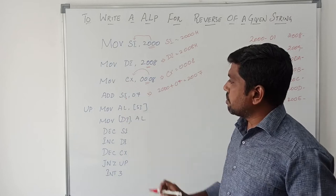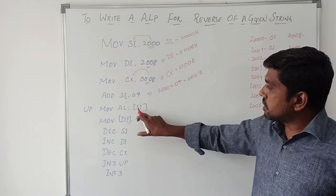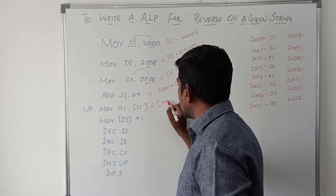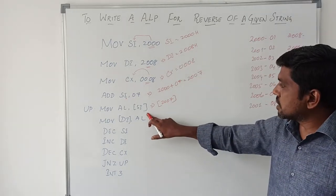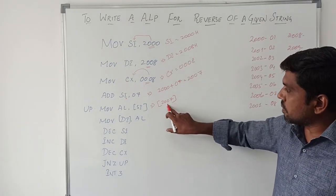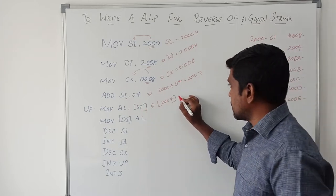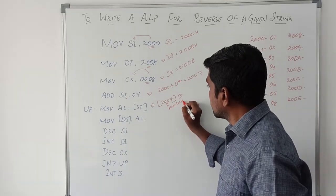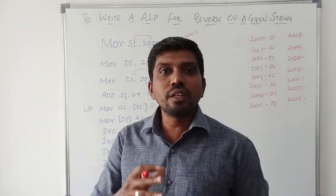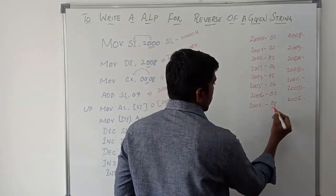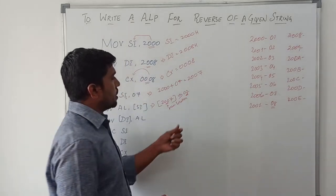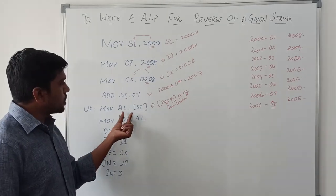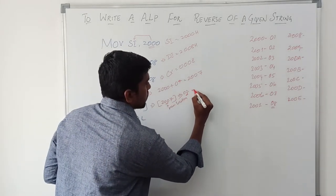Then MOV AL, [SI]. Within brackets, any register mentioned allows you to access the memory location. Here SI value is 2007. So after execution of this instruction, whatever value is present in memory location 2007, the content is transferred to the AL register. In this memory location, it holds the 8-bit data 08. This data is stored in memory location 2007. So after execution of this instruction, 08 is transferred to AL. Now AL contains 08.